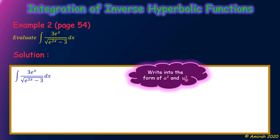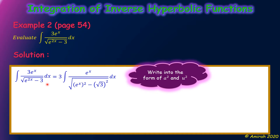Here, a should be a constant and u should be a function in terms of variable x. Before that, we can move the constant 3 outside the integration sign. Then from e^(2x) we write (e^x)² minus, and for the whole number 3, we write it as (√3)² — because when we simplify (√3)² and the square root, we get back 3. So we write in the form a² = (√3)² and u² = (e^x)².